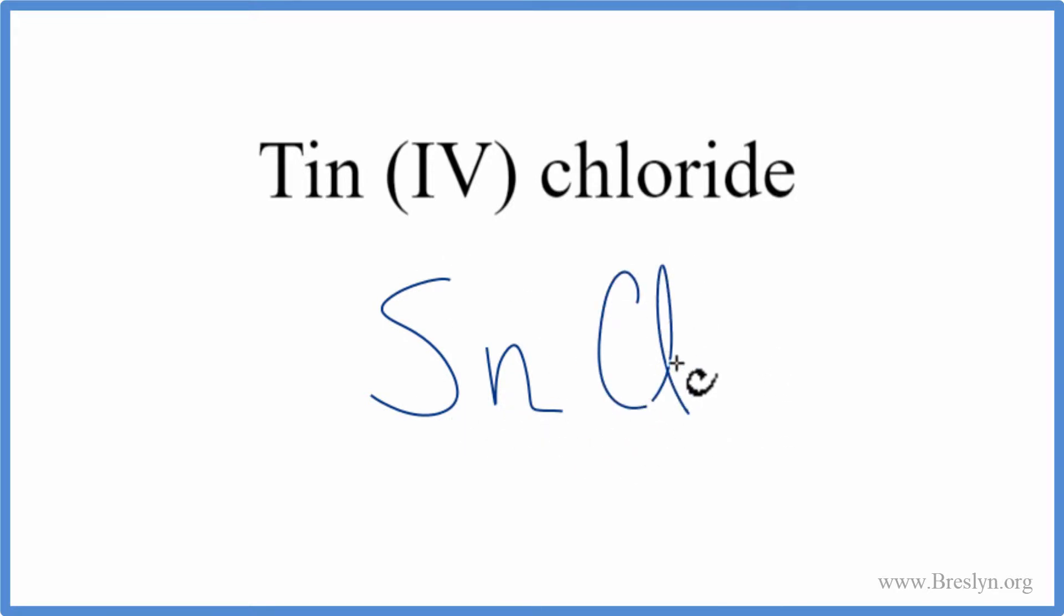Tin, that's a metal, and then chlorine, that's a non-metal. So we have this metal and a non-metal here. This is going to be an ionic compound, so we need to think about the charges on the tin and the chlorine.